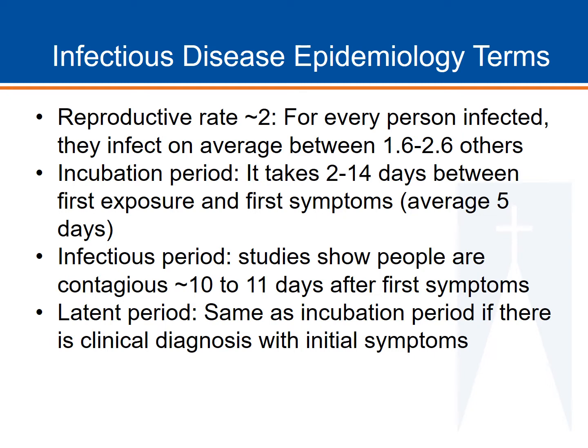Studies show that people are contagious for that time frame — a little less if the symptoms are mild and a little longer if the symptoms are more severe. However, many people don't show very serious symptoms and may not get a clinical diagnosis. We talk about them as latent cases, and the time it takes to get clinical diagnosis as the latent period. The reality of COVID-19 is that very often there is no clinical diagnosis, and people don't know to take protective measures because they don't realize they have this condition.